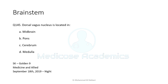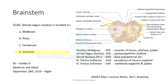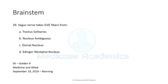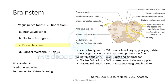The dorsal vagus nucleus is located in the upper part of the medulla oblongata. Many questions in SK Golden 9 have been asked regarding the nucleus of the vagus nerve. Vagus nerve fibers take general visceral efferent fibers — which are parasympathetic fibers — from the dorsal vagus nucleus. This has been asked multiple times in different forms: 'general visceral efferent fibers from the dorsal vagus nucleus.'